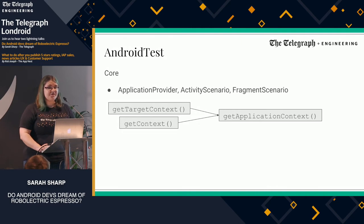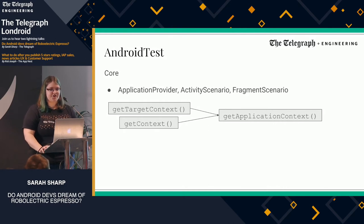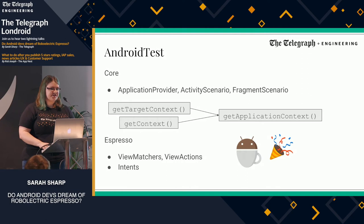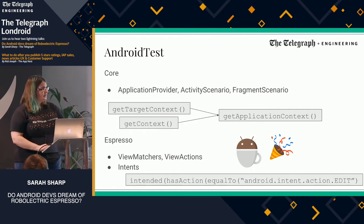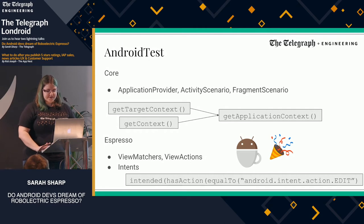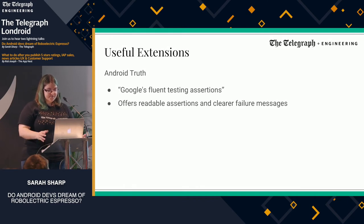They've come up with a few more useful methods as well. The GetTargetContext and GetContext methods — one gets the context of the app under test and one gets the context from the test itself — have now been unified. You can just use GetApplicationContext and it will figure out which one you need so you don't end up with an error. The Espresso API was introduced into the system, so the AndroidX testing framework now includes all the Espresso view matchers, view actions, and intents. Android Truth was also introduced as part of Android test, providing fluent testing assertions with readable assertions and clear failure messages.